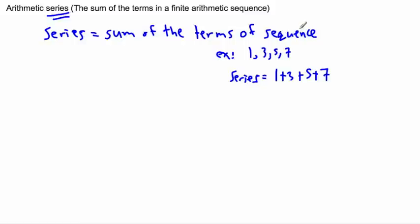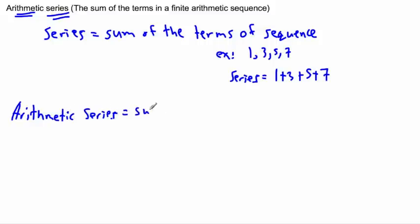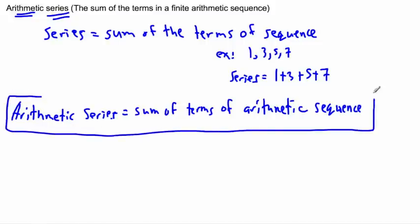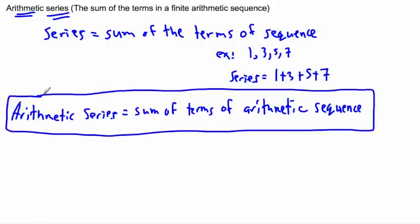That sequence could be arithmetic, it could be neither, it could be geometric, it could be all sorts of things. But in this case, if it's an arithmetic series, then it's the sum of the terms of an arithmetic sequence. What I mean by that is, if we have a sequence — a list of numbers with a common difference — then the arithmetic series is just the sum of all of those terms, however many you're looking at.